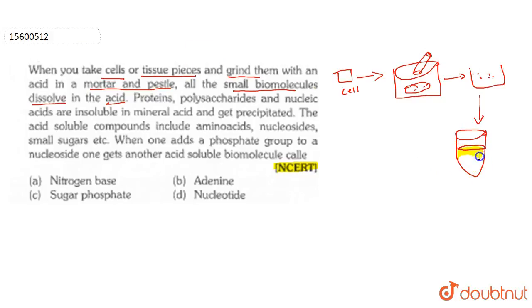We have a test tube with acid. We color the acid in yellow color to represent it. Let's write it - this is acid. In this acid, the small pieces of biomolecules are dissolved.